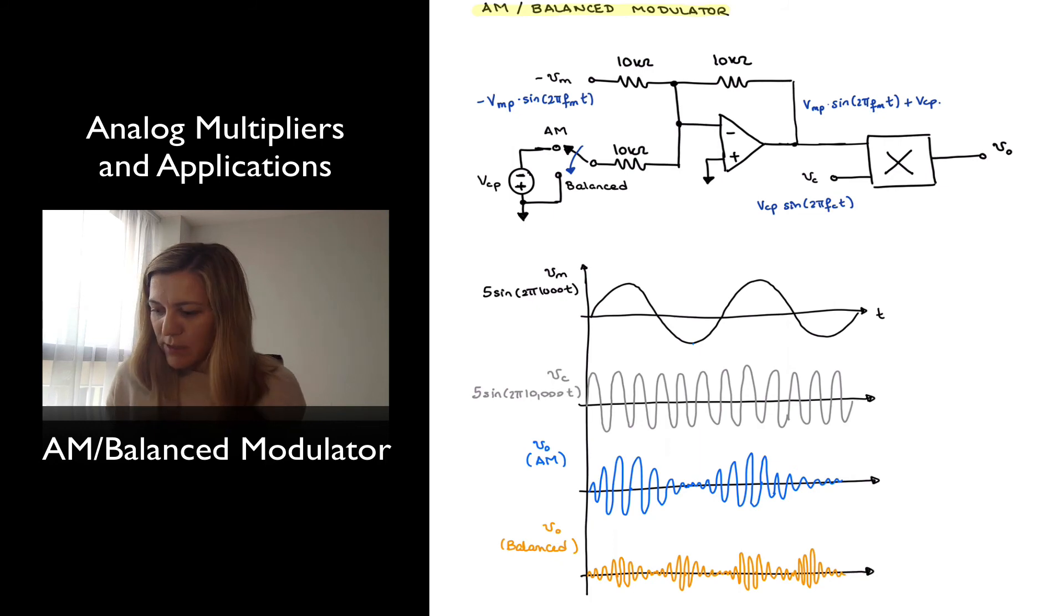So this ideally will be a signal of 10 times the frequency of the previous signal, even though this is obviously not very well drawn to scale. And then I have the Vout representing the result of both AM modulation and balanced modulation.